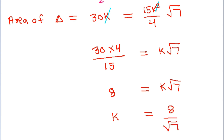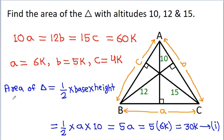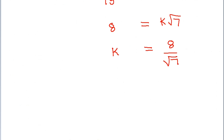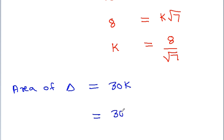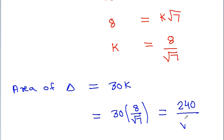From equation 1, the area of the triangle is equal to 30k, and substituting k equals 8 divided by root 7, we get 30 times 8 divided by root 7, which gives us the area of the triangle equal to 240 divided by root 7.